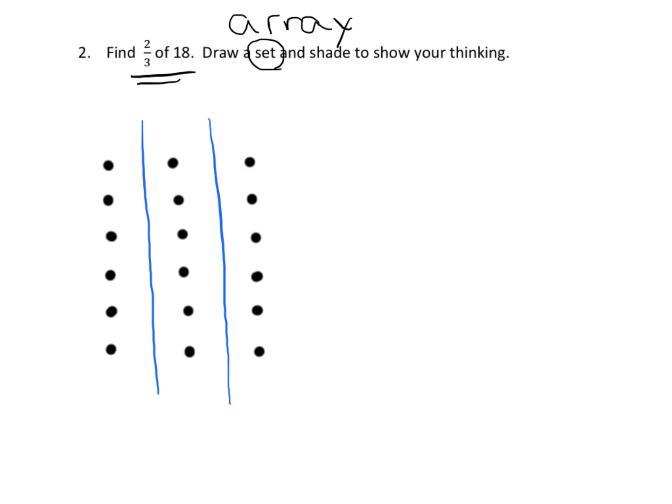So we can see that this is 1 third, and this is 1 third, and this is 1 third. So if we want to know what 2 thirds is, well, here we go. Here's our 2 thirds. And what is that? 1, 2, 3, 4, 5, 6 in each column. So 6 plus 6 is 12. So the answer here is 12 dots.